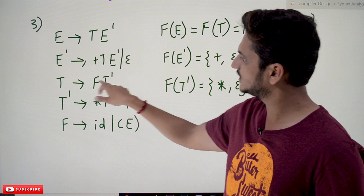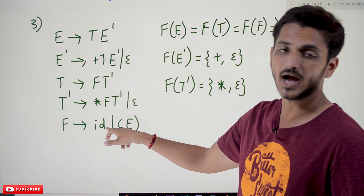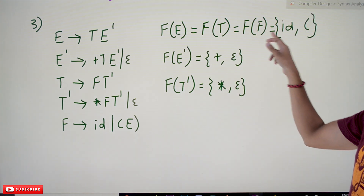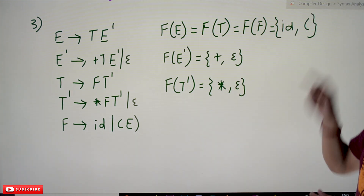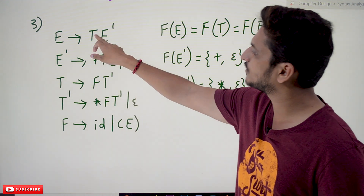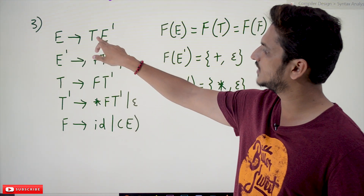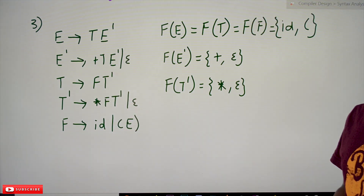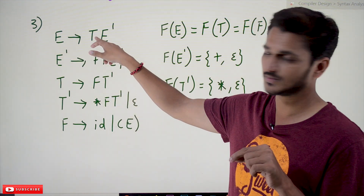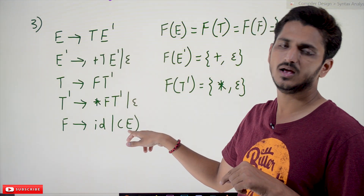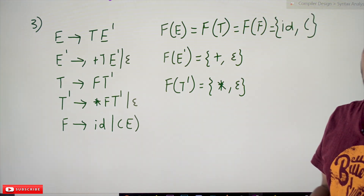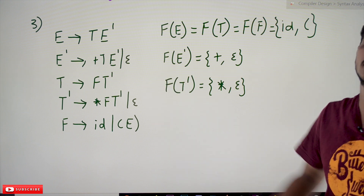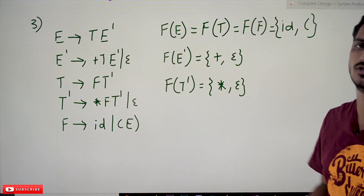FIRST(E) = FIRST(T), and FIRST(T) = FIRST(F). FIRST(F) = {ID, open bracket}. This is the chain: FIRST(E) → FIRST(T) → FIRST(F). So FIRST(E) = FIRST(T) = {ID, open bracket}. You can take either the first terminal symbol as ID or open bracket. This point is helpful in our coming classes when we discuss about LL(1), LR(0), and related topics.